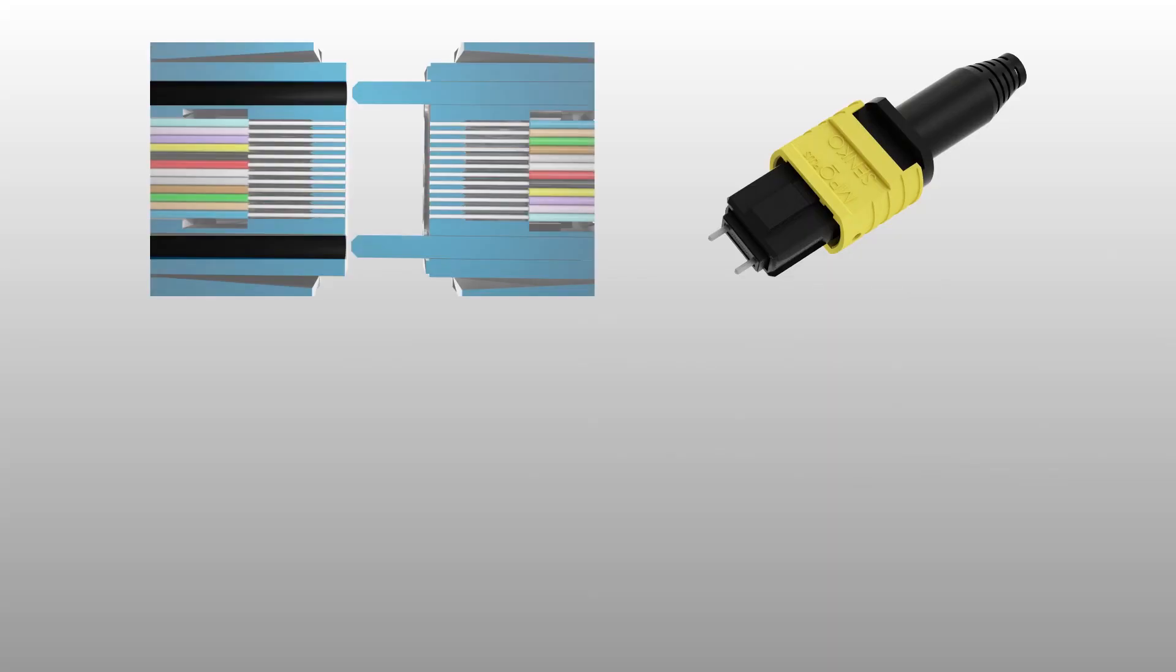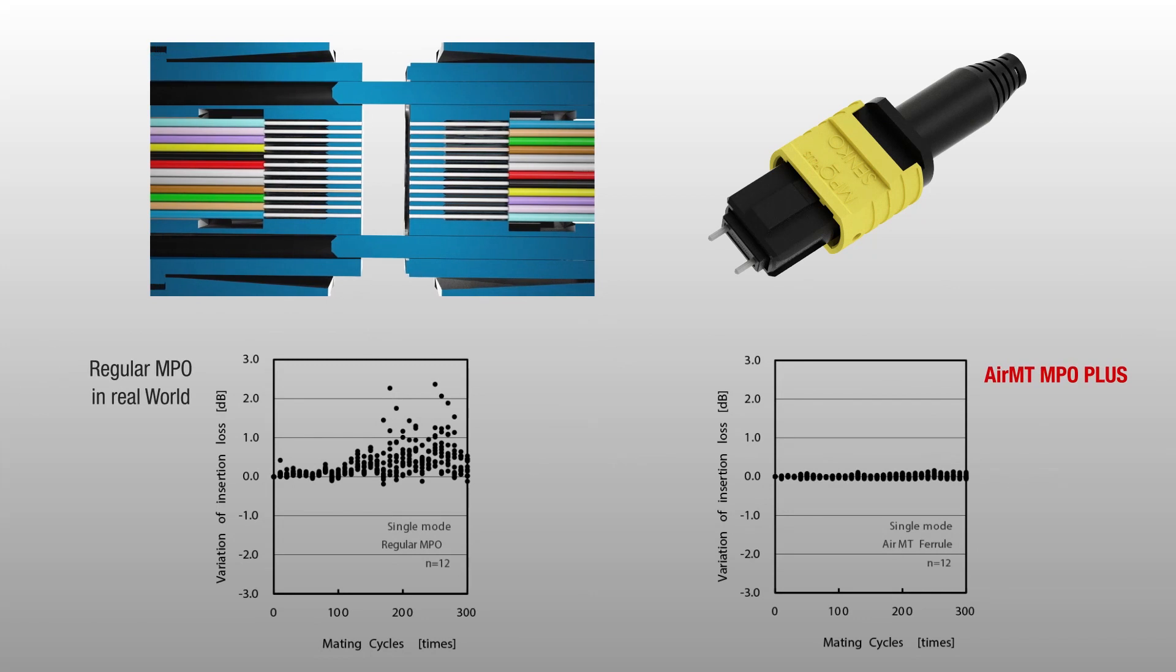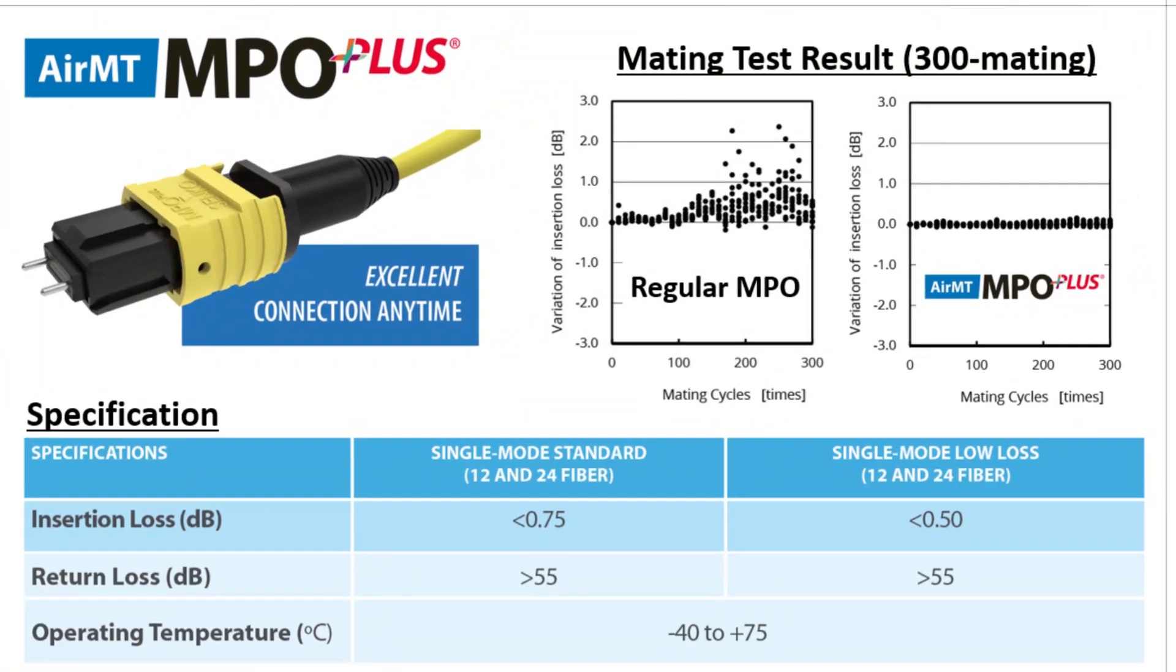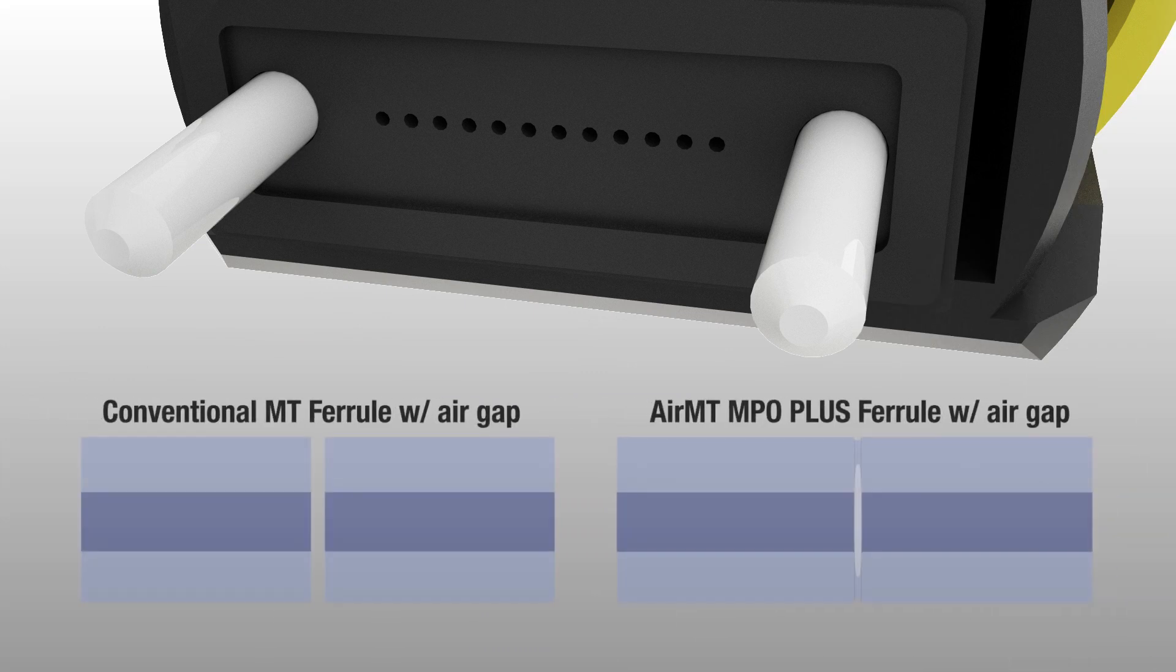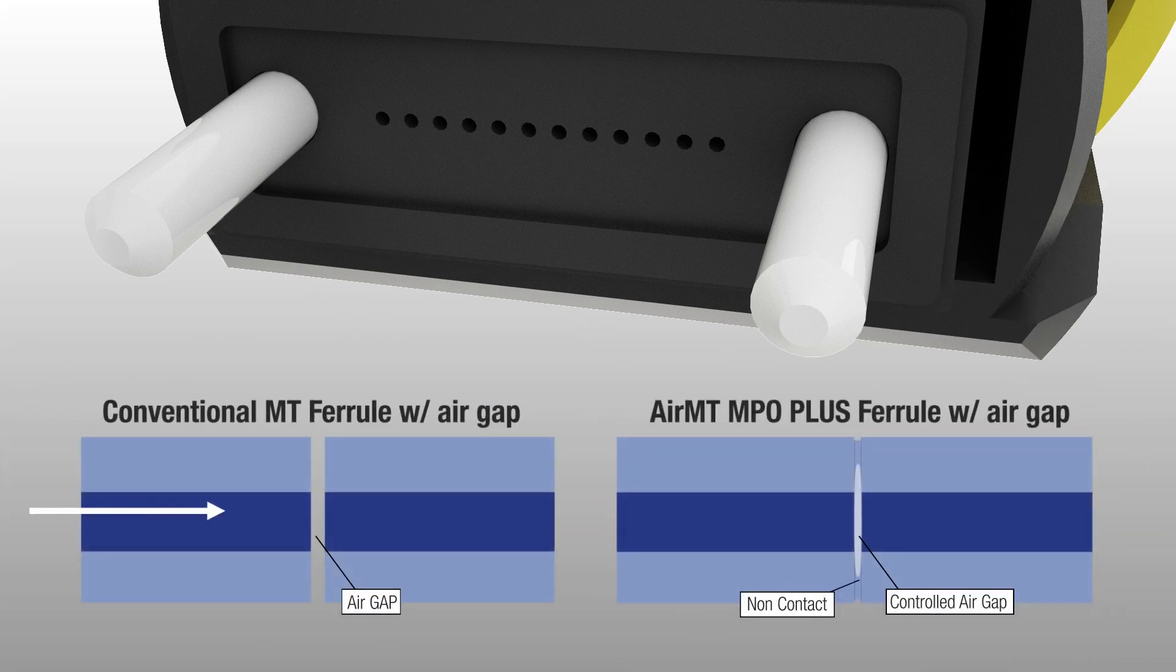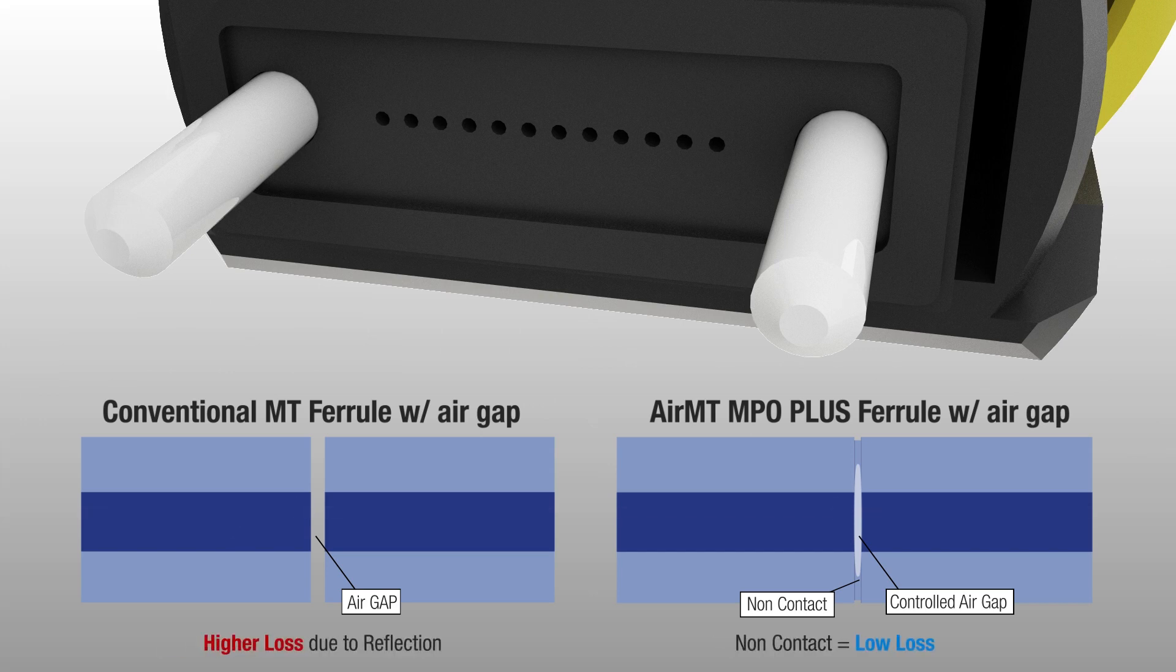Yes, it helps a lot. Unlike conventional MTMPO technology, due to the design we can have more repeatable mating performance while maintaining low insertion loss. With traditional MPOs, it's possible to have air gaps that cause poor optical performance due to different fiber heights. If your polishing process is not refined, the AirMT helps eliminate these challenges.